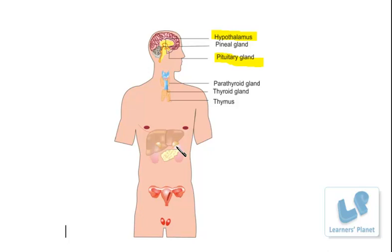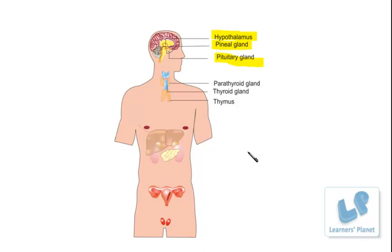Another gland in the brain region is the pineal gland, or pineal body. The secretion of the pineal body controls the functions of the ovaries and the gonads — ovaries as well as testes — essentially controlling secondary sexual growth.